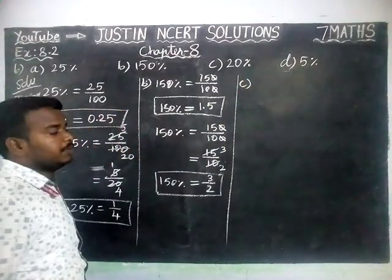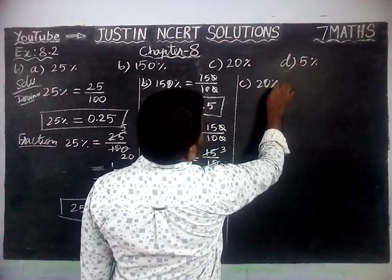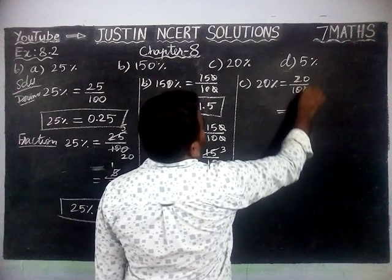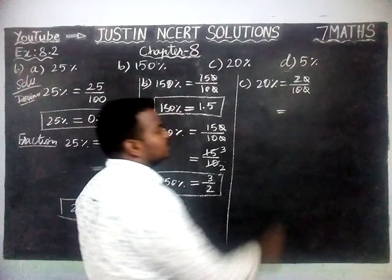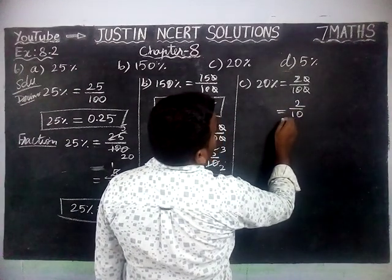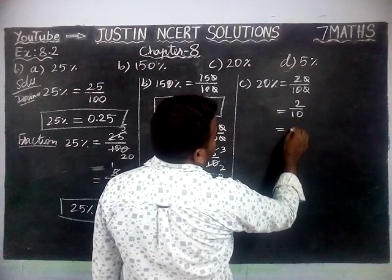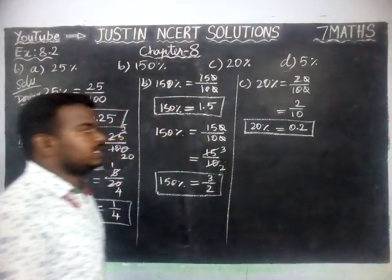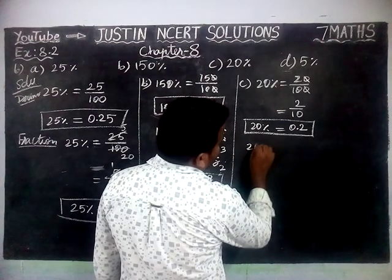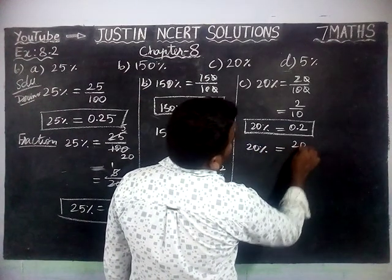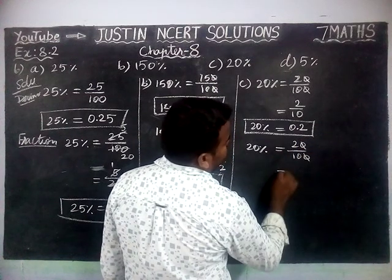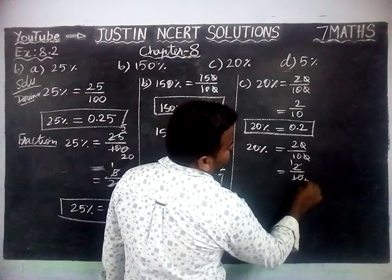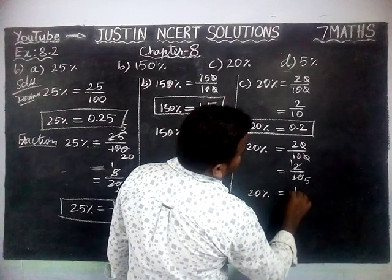Next, part C: 20%. 20% is equal to 20 divided by 100. The zeros get cancelled and we have 2 by 10, which means 1 decimal point, giving 0.2. So 20% is equal to 0.2 in decimal. Next, the fraction: 20 divided by 100, zeros get cancelled giving 2 by 10. The common divisor is 2: 1 two is 2, 5 twos are 10. So 20% is equal to 1 by 5.